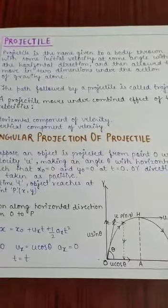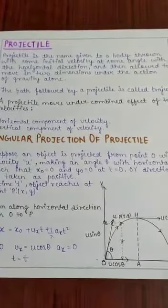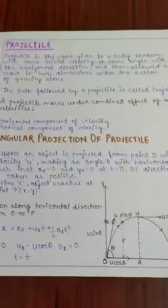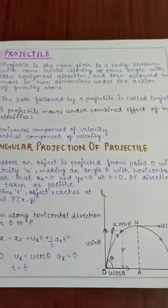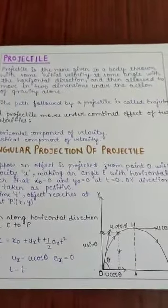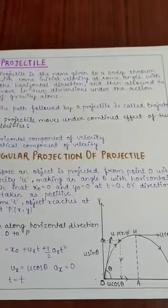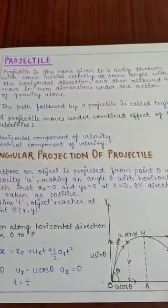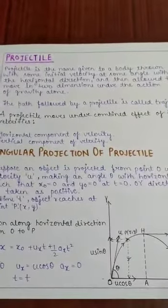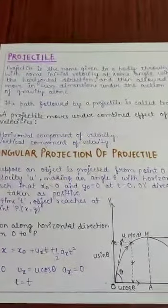So projectile is the name given to a body thrown with some initial velocity at some angle with the horizontal direction and then allowed to move in two dimensions under the action of gravity alone. So projectile kya hai? Kisi bhi body ko agar humne ground se upar fika hai with certain initial velocity jo ground ke saath koi angle bana raha hai. Jab woh body two dimensions move karegi, toh us pe sirf gravity ka hi influence hoga. Gravity ki influence mein woh gir jayegi. Aisi body ko hum projectile bolte hai.